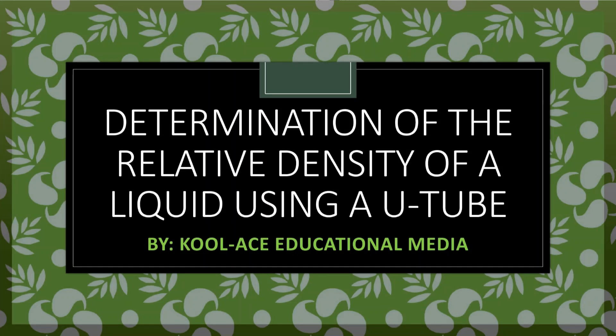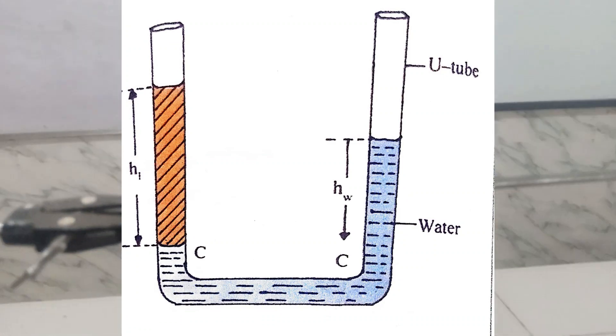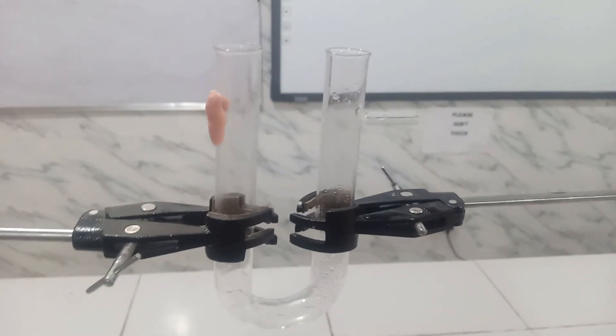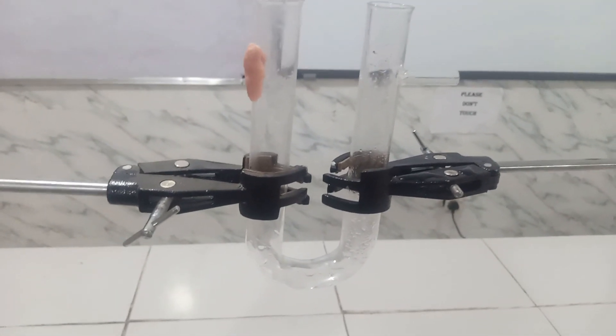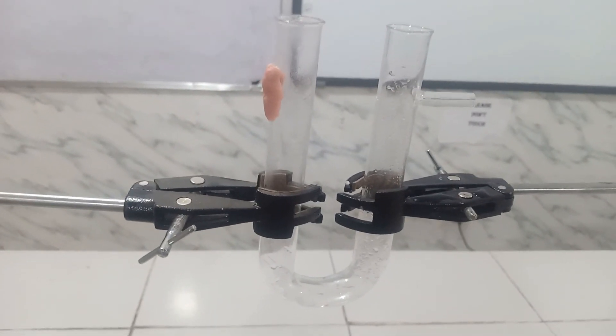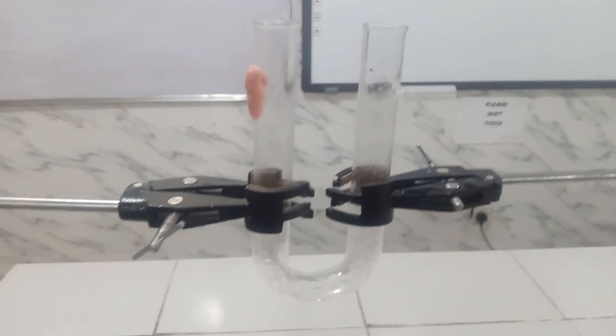Welcome back to our class. In this class, we are going to be determining the relative density of a liquid using a U-tube. The liquid under consideration is pure granule oil, and we are going to be comparing it with water. We will let water in from one arm and the granule oil from the other arm. When we notice a height difference, we measure it for both liquids, repeat for five readings, and then plot a graph of the height of the liquid against the height of water to get the relative density.